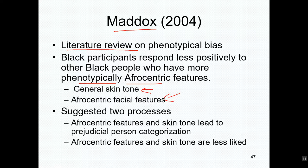Maddox suggested two processes at work here. One could be that Afrocentric features and skin tone lead to prejudicial person characterization — an overall prejudice against Afrocentric features within and outside the group, so darker-skinned people with more Afrocentric features are less liked. The other process is that Afrocentric features and darker skin tone are simply aesthetically less preferred.